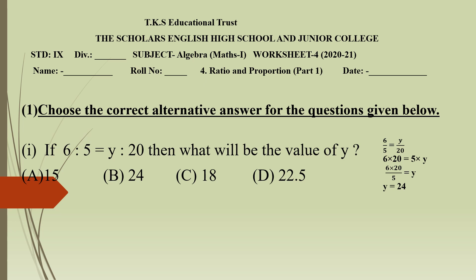I have solved it here: 6 upon 5 equals y upon 20. Let's do cross multiplication, so it will become 6 into 20 equal to 5 into y. The 5 will come to this side and divide. So 5 ones are 5 and 5 fours are 20, you will get y is equal to 24. So the answer is option B, that is 24.